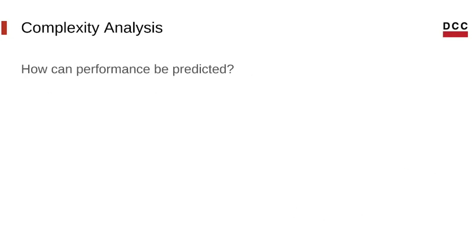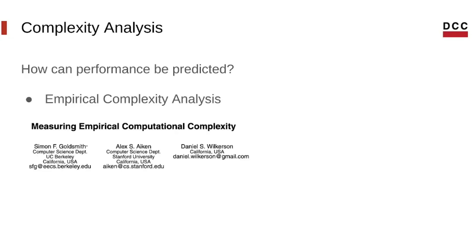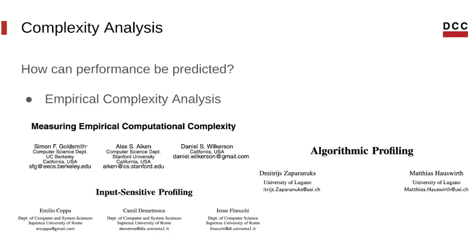But how can performance actually be predicted? There are different approaches for this in literature, but one of the most common ones is through empirical complexity analysis. We analyze the program through multiple executions with different inputs — at each execution, we relate an input with a performance metric. After that we have a set of tuples or points and we can apply some form of curve fitting or polynomial interpolation to those points, and through that we get a closed-form equation that describes the cost of the program based on its parameters.